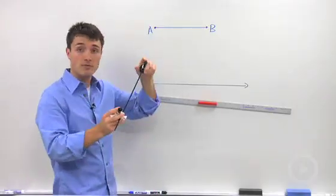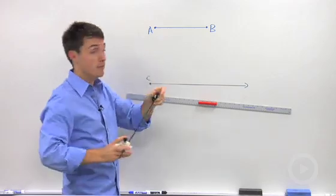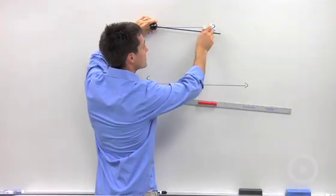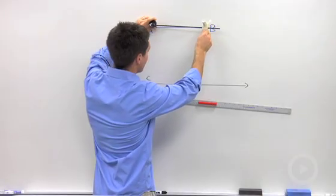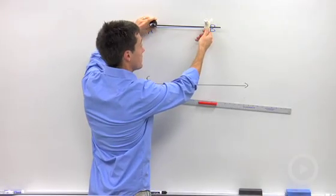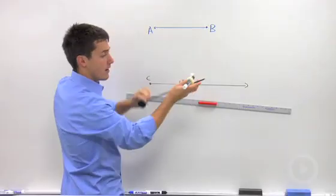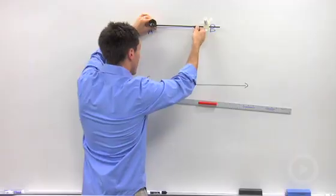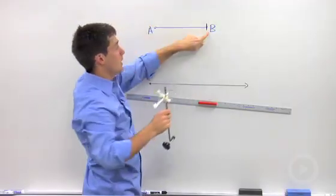Take the sharp end of your compass, or the rubber end for me, and put it on endpoint A. Then stretch your compass until it measures exactly the distance of your line segment. The way you verify that is by making a little mark on the end of your line segment, right there on B.